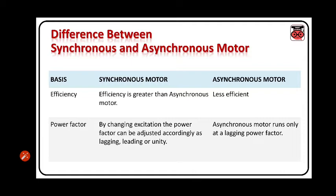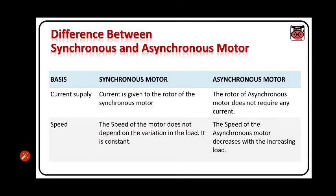Power factor: by changing excitation, the power factor can be adjusted accordingly as lagging, leading, or unity. In an asynchronous motor, it runs only at lagging power factor. Current supply: current is given to the rotor of the synchronous motor, whereas the rotor of the asynchronous motor does not require any current.